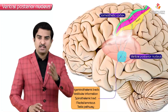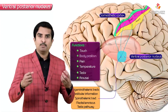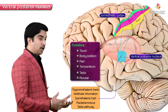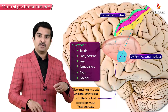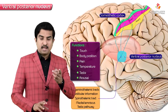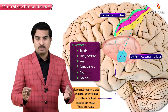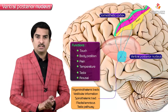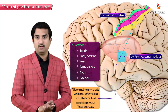The information carried includes touch, body position, pain and temperature, taste, and arousal mechanisms. The intermediate nucleus modulates tremor in certain pathological conditions. This is what we need to know about the ventral posterior nucleus.